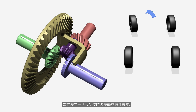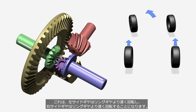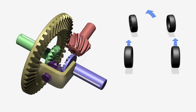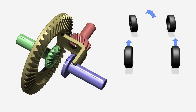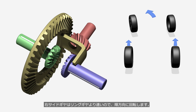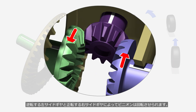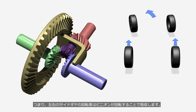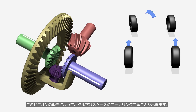When turning left, the right tire on the outside of the corner rotates faster than the left tire. This means the left side gear rotates more slowly than the ring gear, while the right side gear rotates faster. Considering the ring gear held stationary, the left side gear can be regarded as rotating in reverse, while the right side gear rotates in the forward direction. The pinion is driven by the left side gear rotating in reverse and the right side gear rotating forward — the rotational difference between the left and right side gears is absorbed by the rotation of the pinion, allowing the vehicle to corner smoothly.